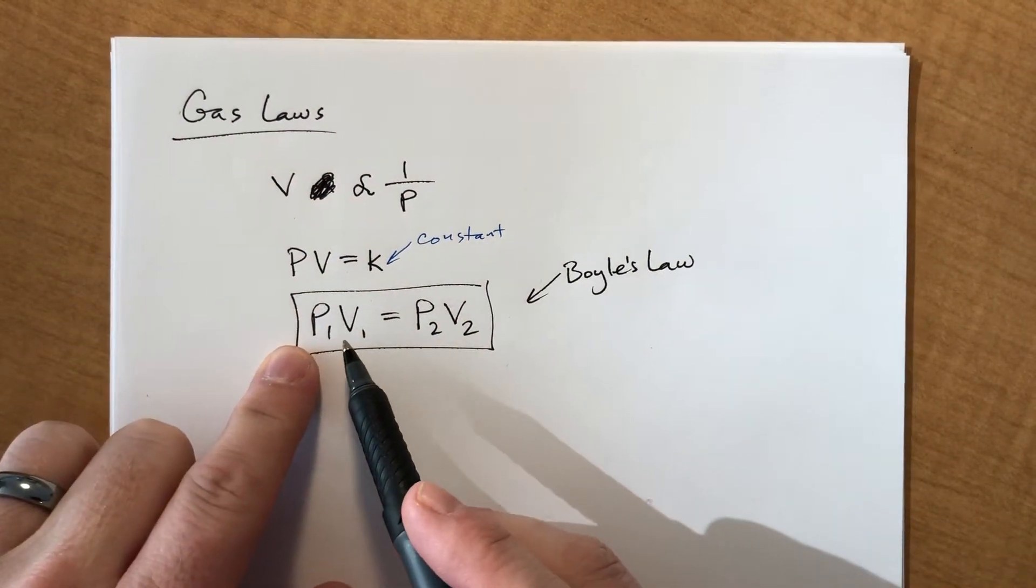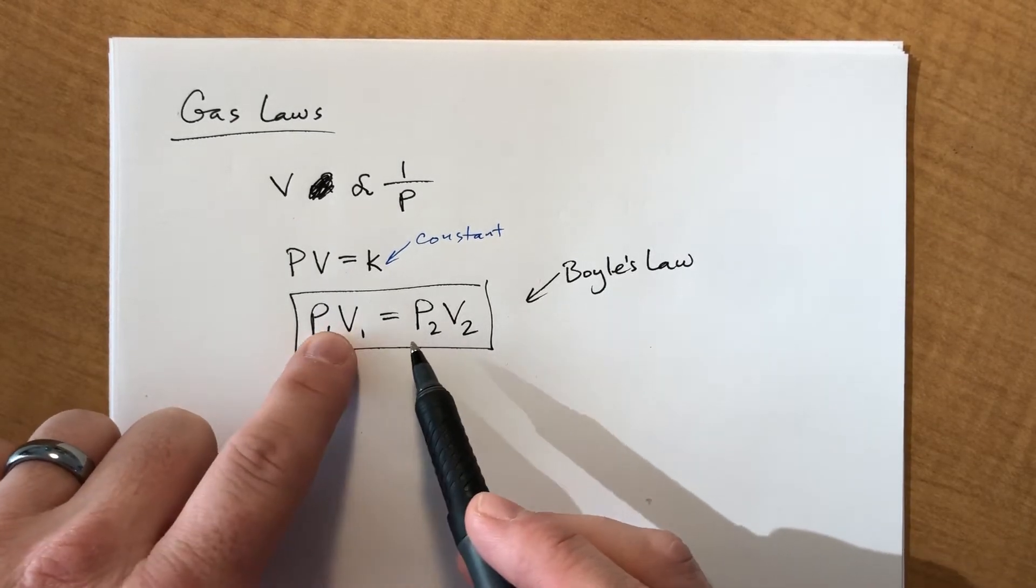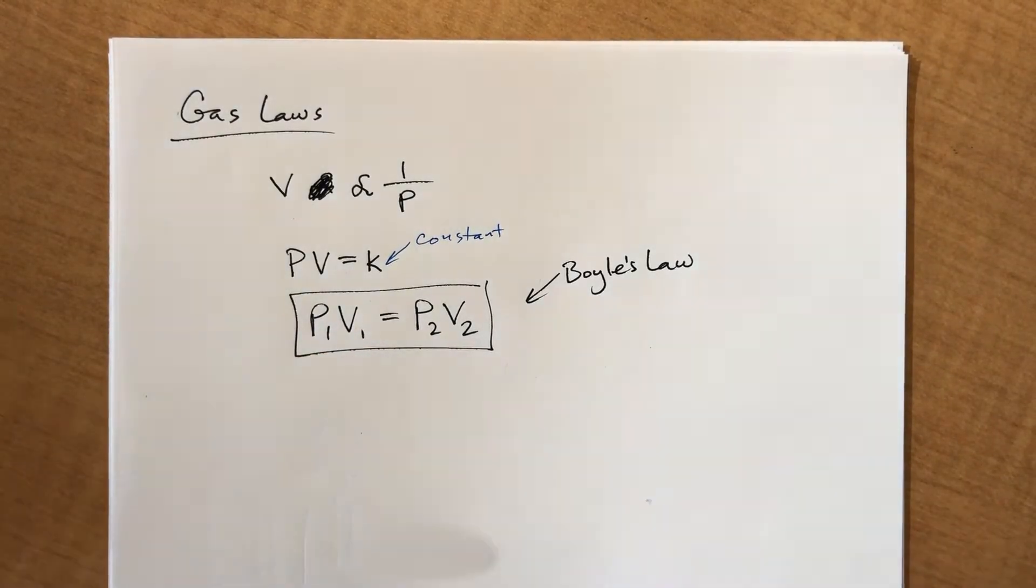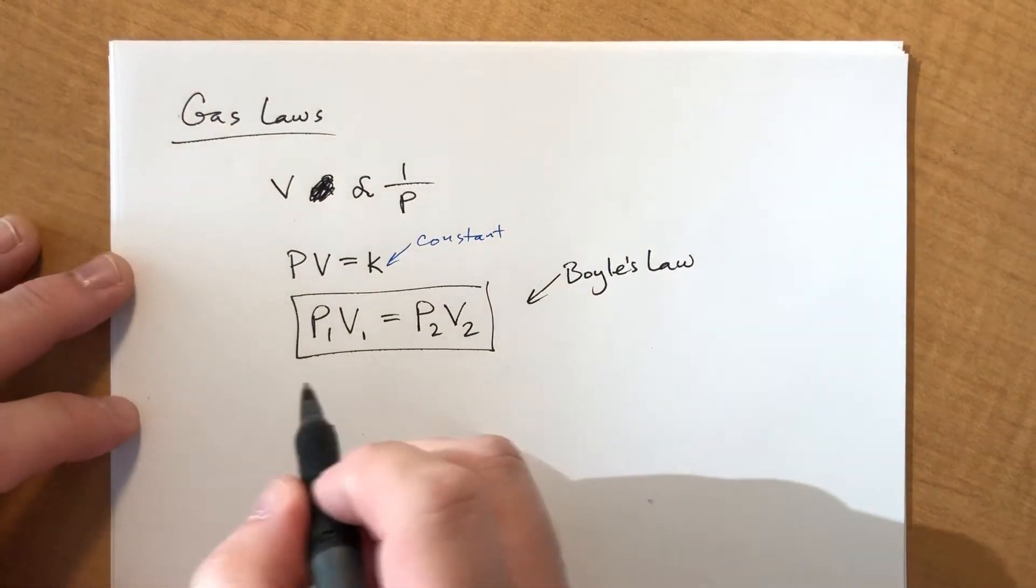But the idea is that pressure and volume work like this. So as long as you have one set of conditions and you change things, as long as you have three of the four variables, you can solve with the unknown one. I'll do some examples eventually, but we're just going to work through some of the laws here.